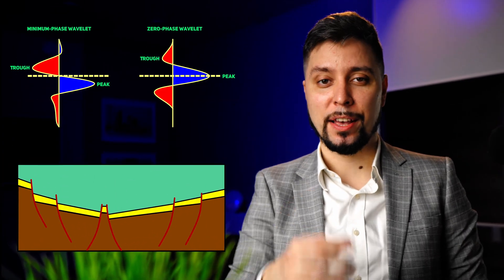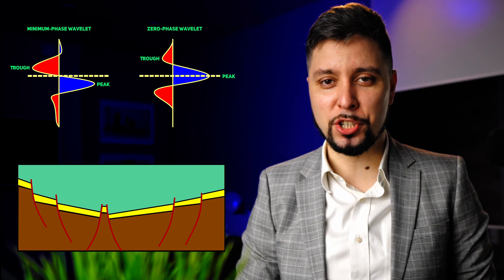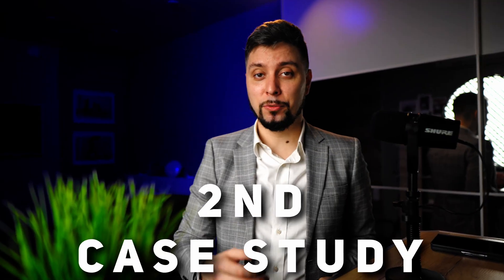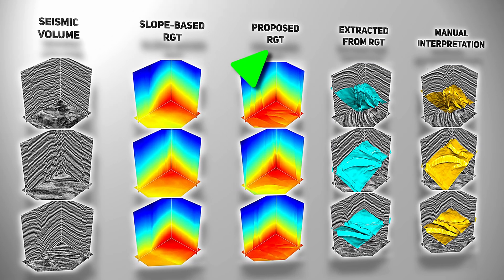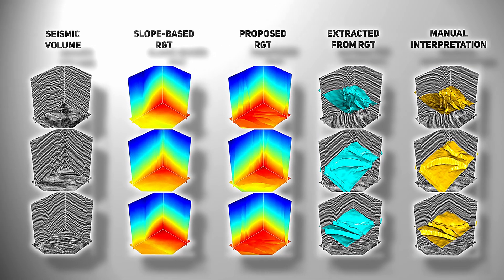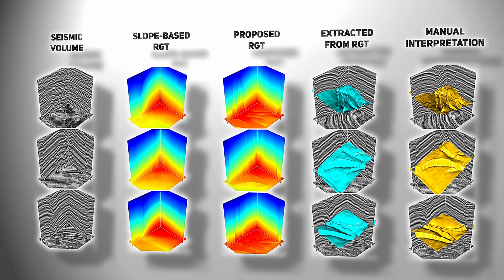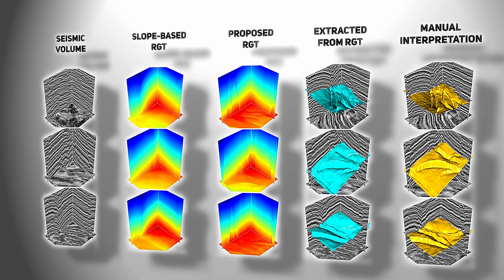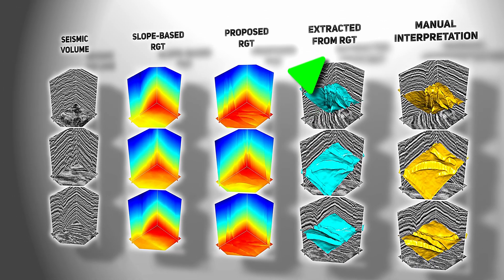The second case study involves highly noisy and complex seismic data with closely spaced faults. The deep neural network outperforms the slope-based method in accuracy, tracking the seismic horizons, dislocating across faults, and detecting most of the faults, even in the case of complex intersections.